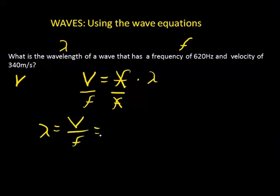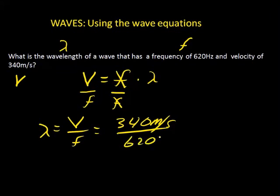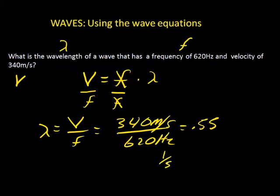Now we plug in the numbers and units, cancel as needed, and find our answer. The velocity is 340 meters per second divided by 620 hertz. When we divide 340 by 620 we get 0.55 — that's two significant digits. Remember that hertz is really 1 over s, so seconds factor out, leaving meters as our unit. Our answer is 0.55 meters.